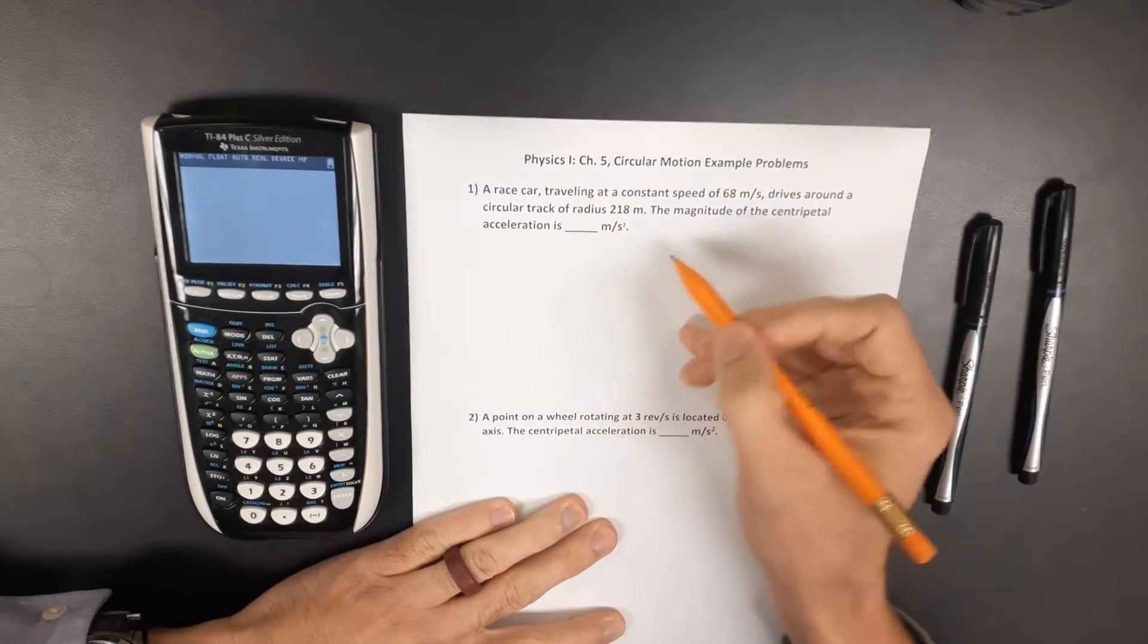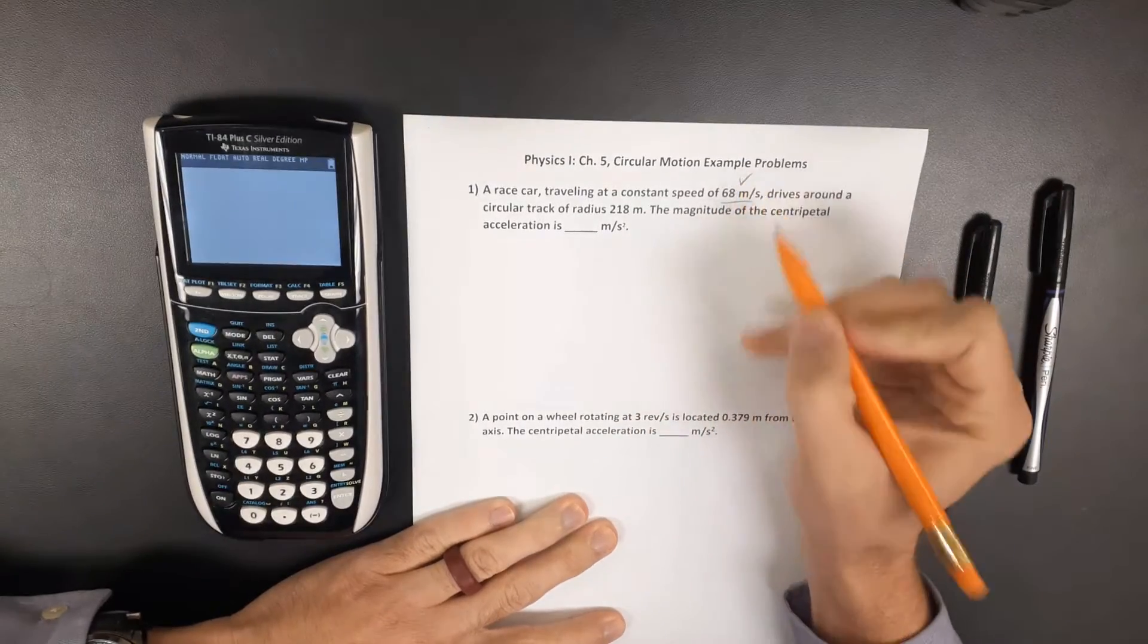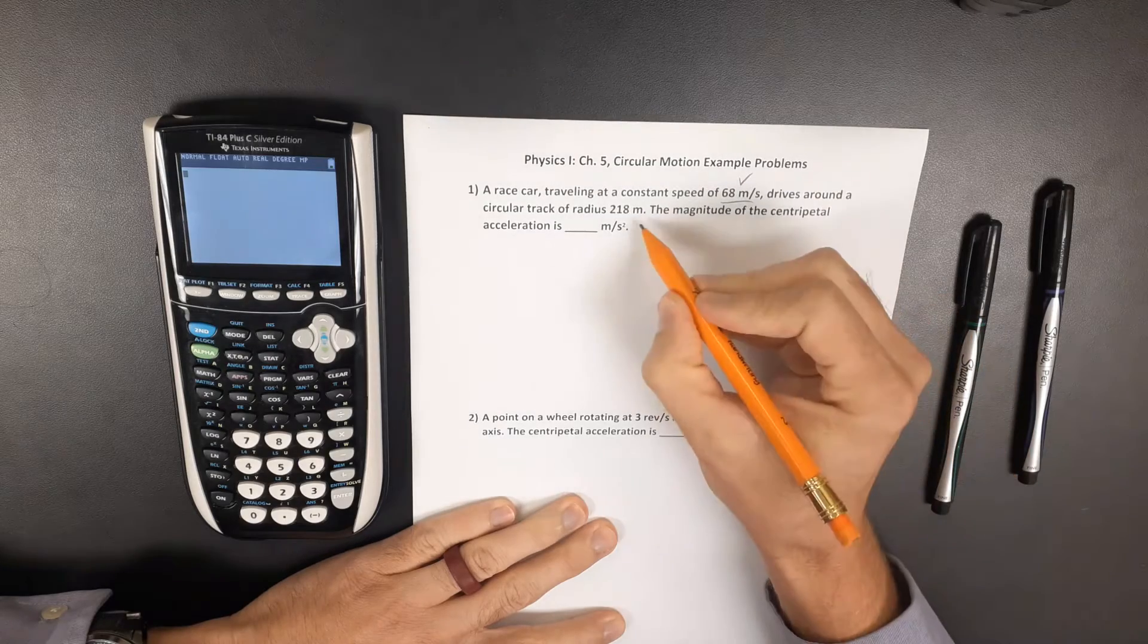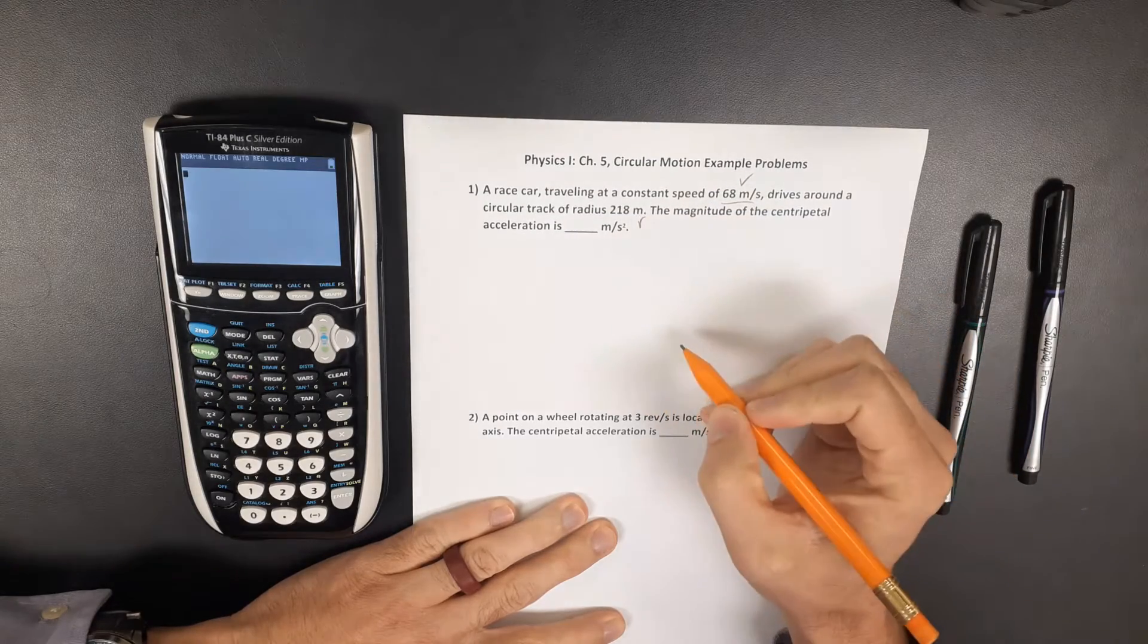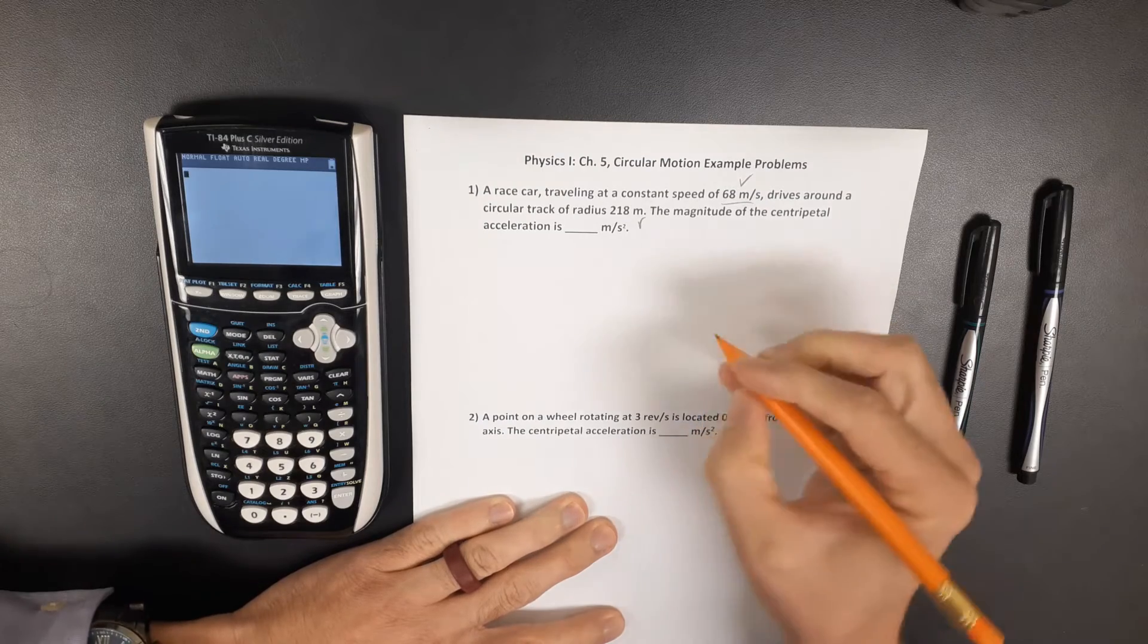In this problem, a race car is traveling around a circular track with a speed of 68 meters per second and a radius of 218 meters. So what is a centripetal acceleration?